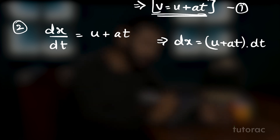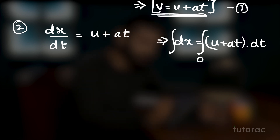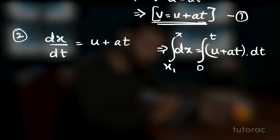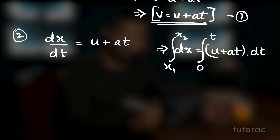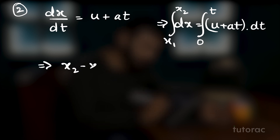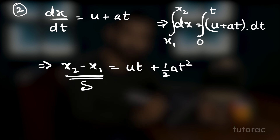Integrating both sides, we get x as a function of t. It is given that at time t equals 0, the particle is at x1, and at time t, the particle is at x2. Substituting the limits and integrating, we get x2 minus x1 equals ut plus half at squared, where x2 minus x1 is the displacement s. So the second equation of motion is s equals ut plus half at squared.